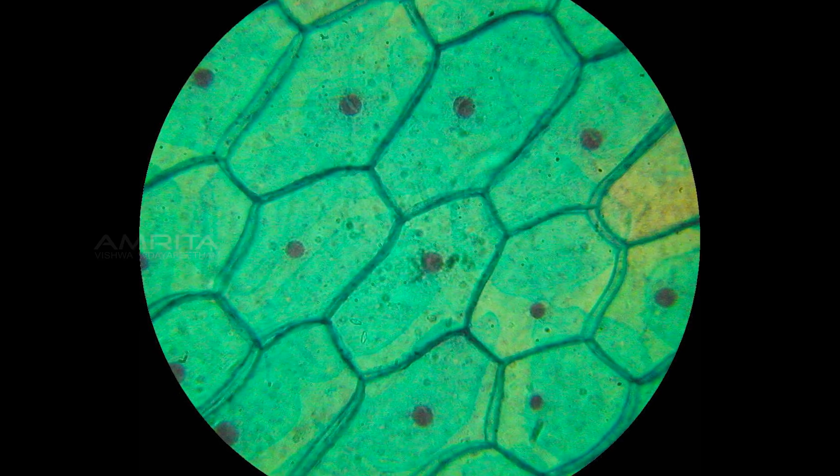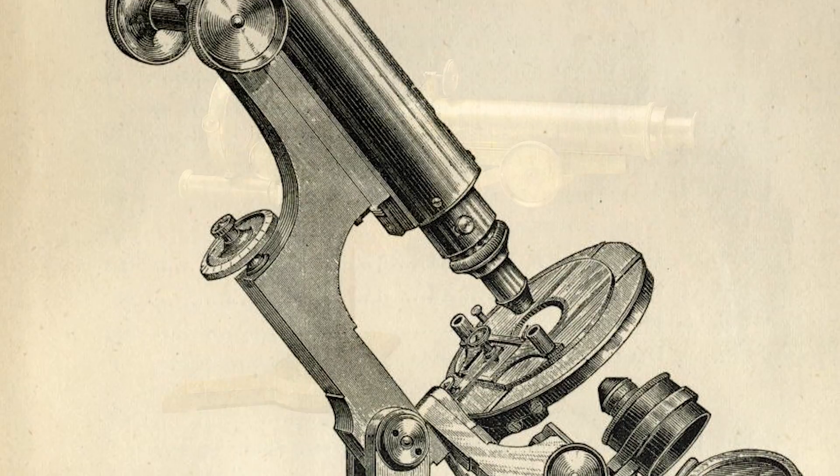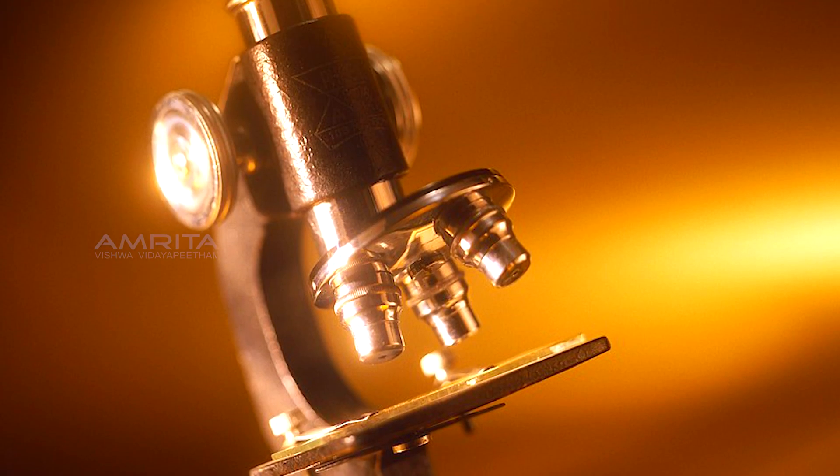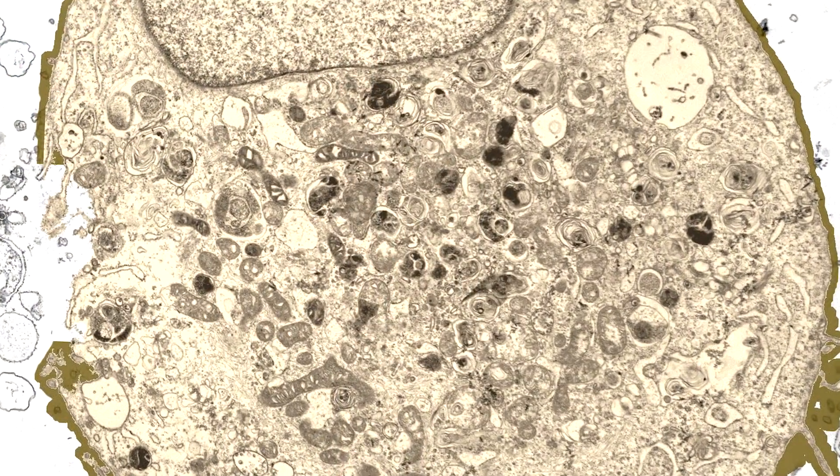The discovery and earlier study of cells progressed with the invention of the microscope in 1590 and its refinement during the 1600s. In 1665, Robert Hooke observed the cell wall of dead cells from the bark of an oak tree through a microscope.